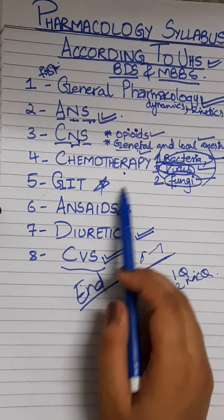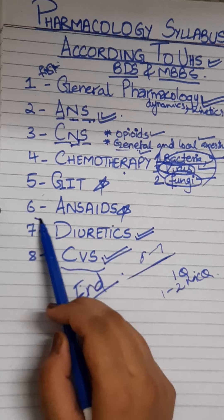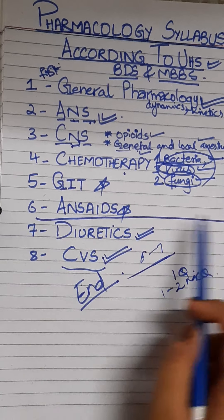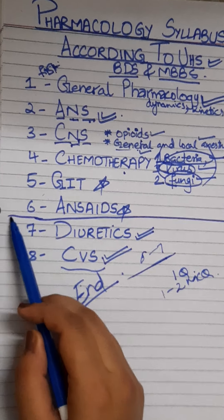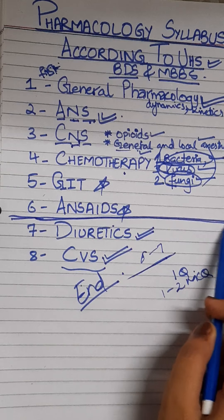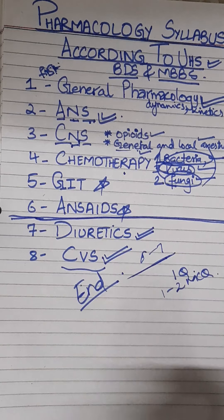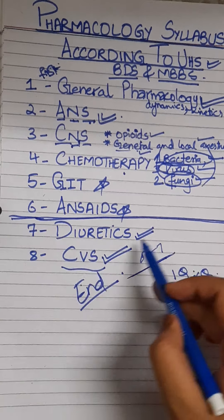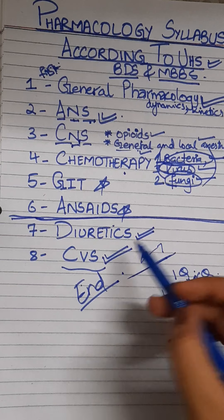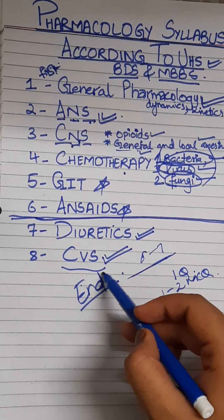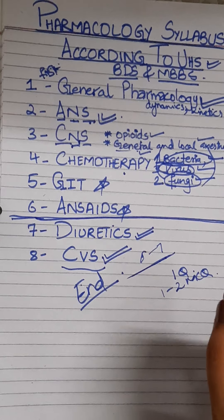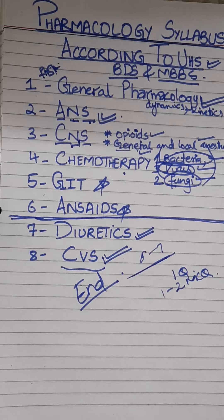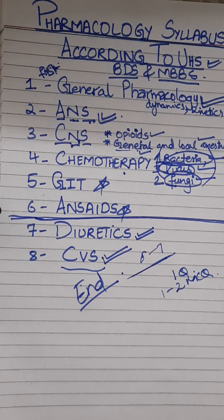I suggest you first do general pharmacology, ANS, CNS, chemotherapeutic drugs, GIT, and NSAIDs very deeply. These six topics will cover your whole paper, and after that you will have time to do diuretics and CVS. Inshallah we'll cover all the topics — thank you so much.